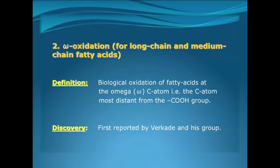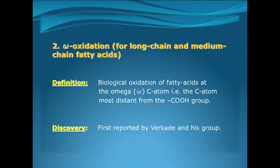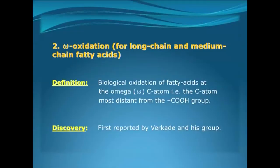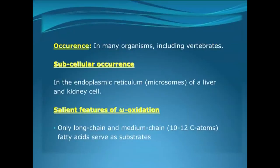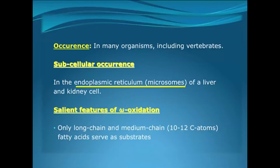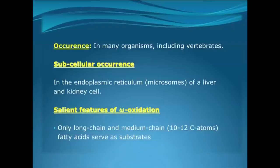Coming to the second minor pathway of fatty acid oxidation: omega oxidation, applicable only for long-chain and medium-chain fatty acids. Omega oxidation is the removal of one carbon unit from the C-omega atom — the carbon atom farthest from the beginning carboxyl group of the fatty acid. This was discovered by Verkade and his group. It occurs in almost all organisms including vertebrates, and subcellularly this reaction takes place in the endoplasmic reticulum of the microsomes of liver and kidney cells. It is applicable for long-chain fatty acids as also for 10 to 12 carbon atom medium-chain fatty acids.